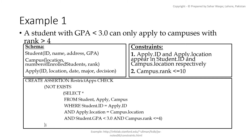NOT EXISTS returns true if there is no such tuple, and false if the subquery is able to find such tuples from the join of the Student, Campus, and Apply tables on the basis of student ID and campus location. Any modification — insert, update, or delete — that causes this assertion to become false will be automatically rejected.